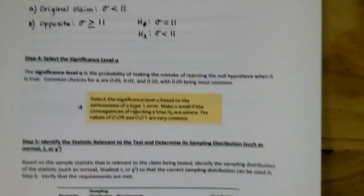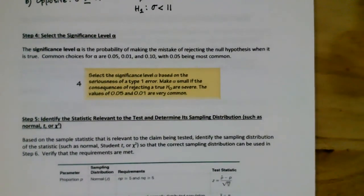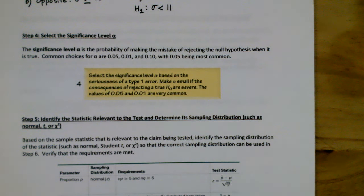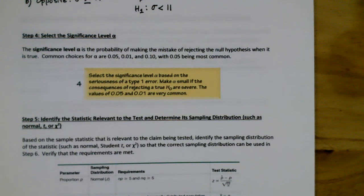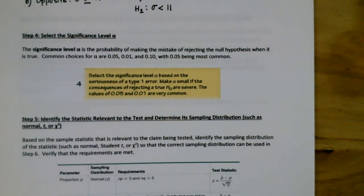Step number four in the hypothesis testing procedure: select a significance level, which is your alpha level — the probability of making the mistake of rejecting the null hypothesis when it is true. The three common choices for alpha are 0.05, 0.01, and 0.10, with 0.05 being the most common. In the problem, you will be told which level of significance to use, so it will already be given to you.